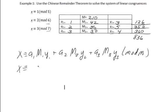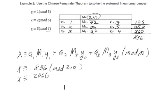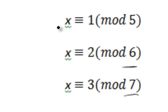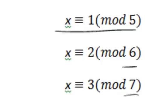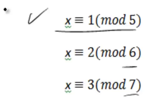So the solution is 836 mod 210. Reducing: 210 goes into 836 three times with a remainder of 206, so x is congruent to 206 mod 210. Let's check: 206 divided by 5 has remainder 1 ✓; divided by 6 has remainder 2 ✓; and divided by 7 has remainder 3 ✓. So 206 satisfies the original system.